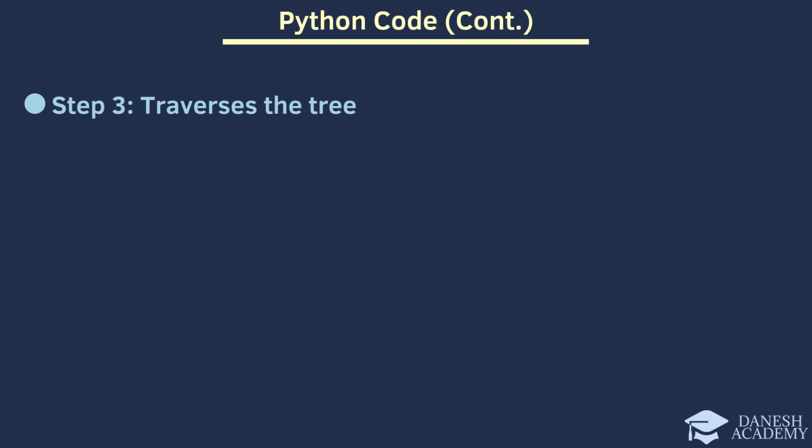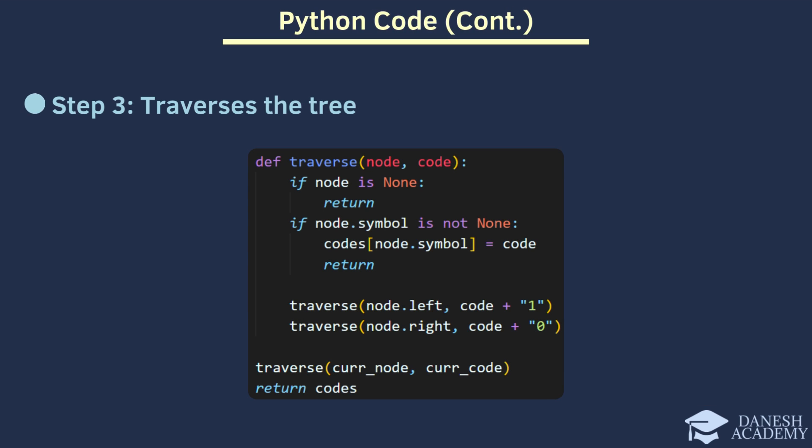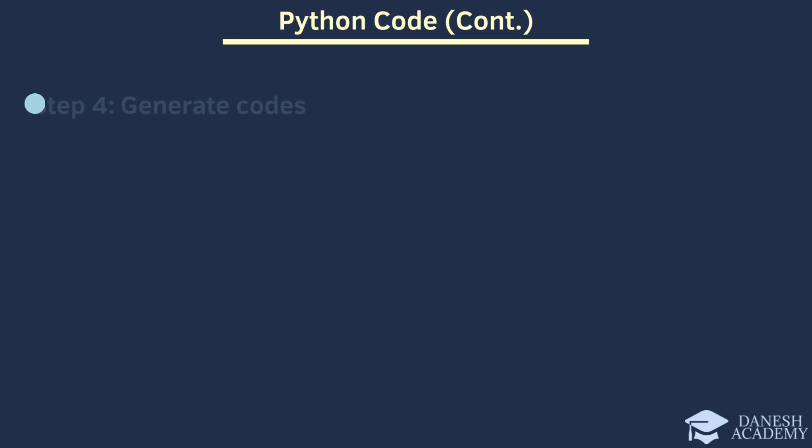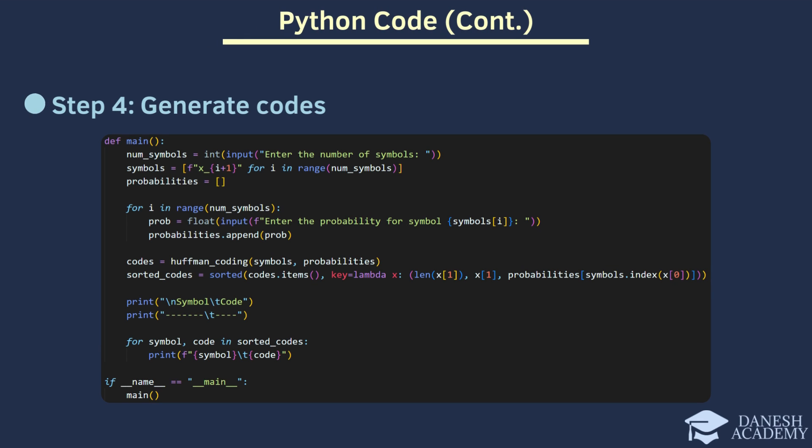Step 3 involves traversing the constructed tree. We perform a depth-first traversal assigning 0 to left edges and 1 to right edges, building the codeword for each symbol as we traverse down the tree. Finally, in step 4, we generate the Huffman code. After traversing the tree and assigning codewords to each symbol, we have a mapping of symbols to their respective binary codes, achieving efficient compression based on their probabilities.